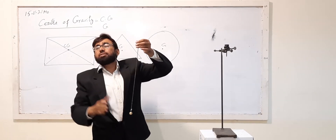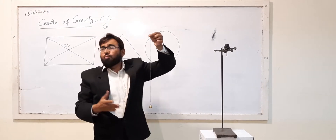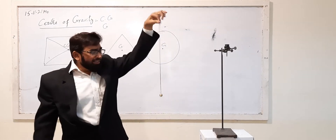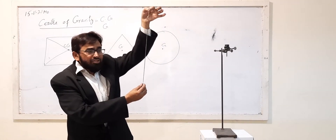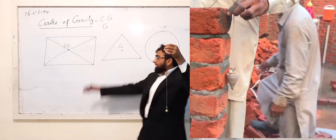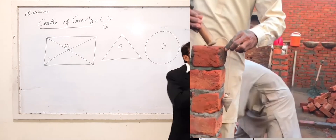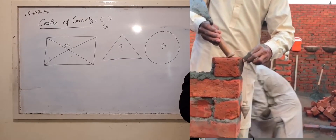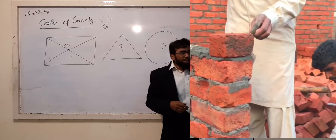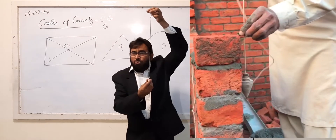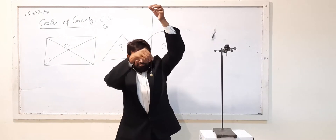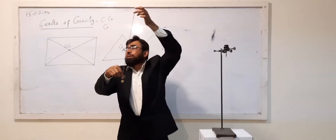A plumb line is an instrument used by masons while constructing walls. It is suspended like this. Masons use it to check whether their wall is going vertical. There must be a weight suspended with a thread — here I have a metal ball which I am using as a plumb line.